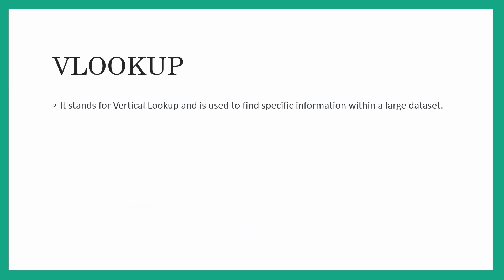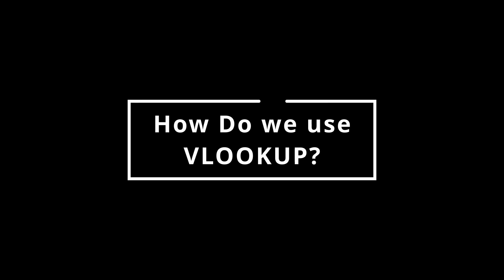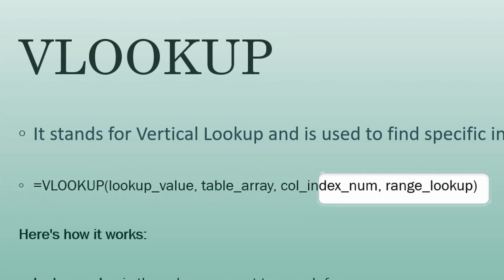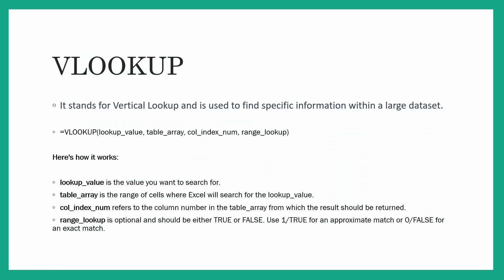What do you mean by VLOOKUP? It stands for vertical lookup and it is used to find specific information within a large data set. The syntax is: VLOOKUP(lookup_value, table_array, column_index_number, range_lookup). Your lookup value is the value you want to search for. Your table array is the range from where you want to search. The column index number refers to the column number in the table array from which the result should be returned. Range lookup is optional — type TRUE or 1 for approximate match, or FALSE or 0 for exact match.